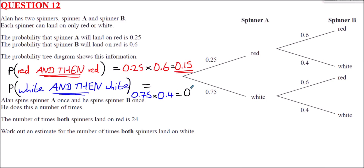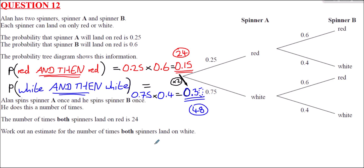Comparing the two probabilities: P(both white) = 0.30 is exactly double P(both red) = 0.15. Since both landed red 24 times, we'd expect both to land white double that number. Therefore the estimated number of times both spinners land on white is 2 × 24 = 48 times.